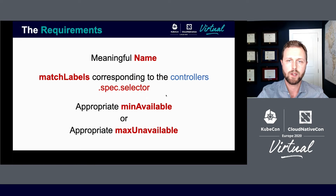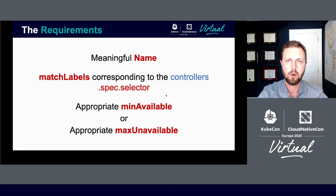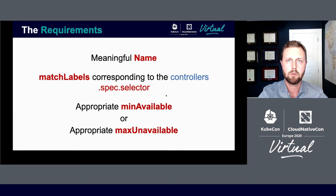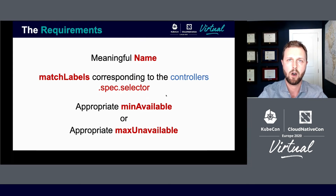The requirements are quite simple for disruption budgets. First, a meaningful name so that it's attributable to the pods that it oversees. Secondly, a match label corresponding to your particular controller selector. The third piece: either a min available or a max unavailable setting. Min available refers to the minimum amount of pods that must be available; max unavailable refers to the maximum number of pods that can be deleted at any point in time.